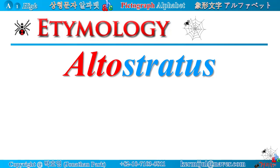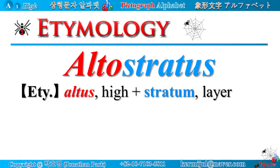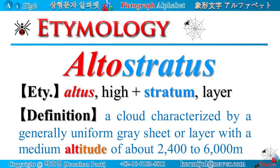Etymology: altostratus. Altostratus is composed of the Latin word 'altus,' meaning high, and 'stratum,' meaning layer. Definition: altostratus means a cloud characterized by a generally uniform gray sheet or layer with a medium altitude of about 2,400 to 6,000 meters.